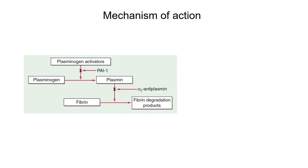Now coming to the mechanism of action. Plasminogen activators cause activation of plasminogen into plasmin, and this plasmin will cause degradation of fibrin into fibrin degradation products. There are two regulators: one is PAI-1, that is plasminogen activator inhibitor 1, and alpha-2 antiplasmin. PAI-1 blocks activation of plasminogen to plasmin, and alpha-2 antiplasmin blocks conversion of fibrin to fibrin degradation products.